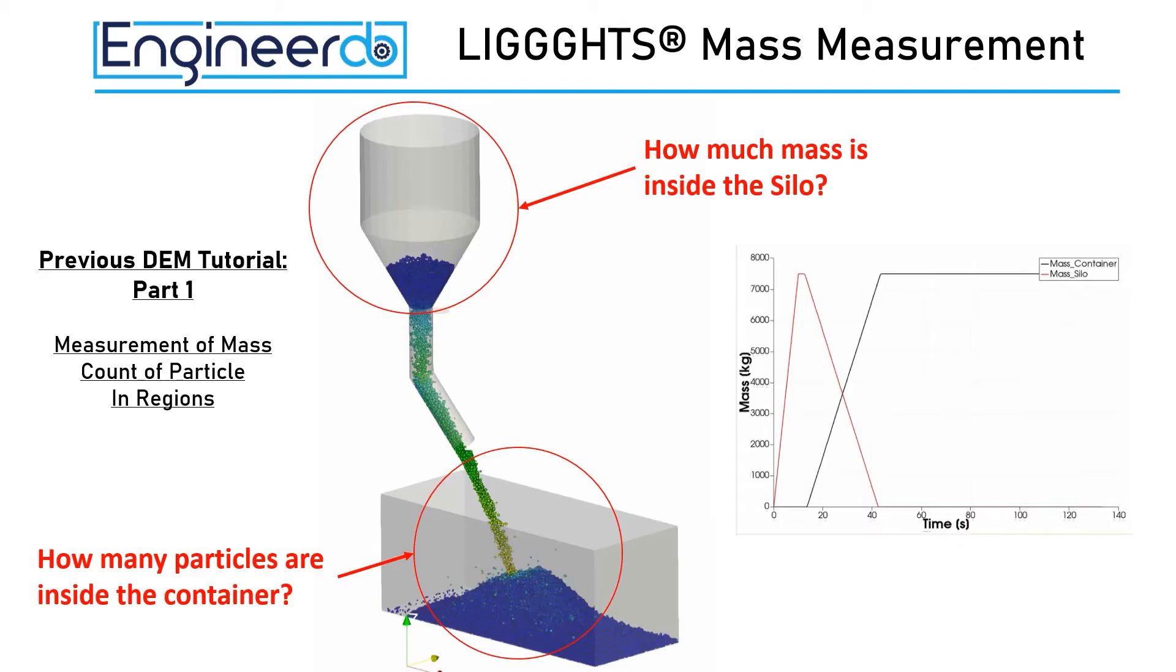In the first part I have shown you how to measure the mass and count the particle in a specific volume by using a corresponding region. This command is extremely useful for example for checking capacity of custom applications.